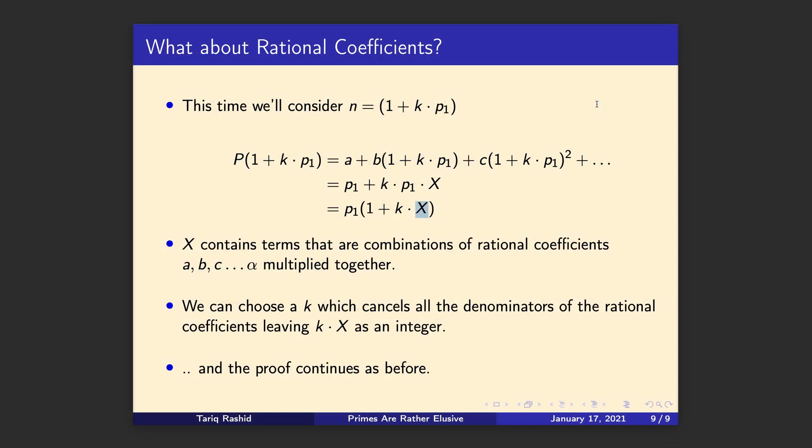Great. So that proves the case that if we allow those coefficients to be rational, we can still reach the same conclusion that polynomials with rational coefficients can't generate only prime numbers, never mind the nth prime number. Fantastic.